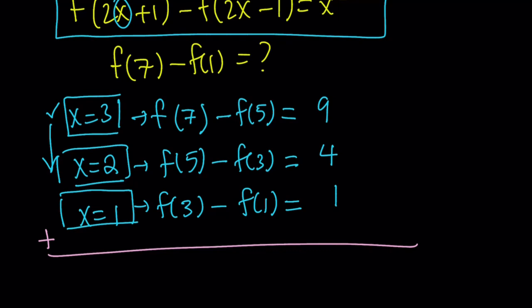So we're going to add these three equations because f of 5 is going to cancel out, f of 3 is going to cancel out, and we're going to end up with f of 7 minus f of 1, which is what we need. And that is going to equal 1 plus 4 plus 9, which is equal to 14.